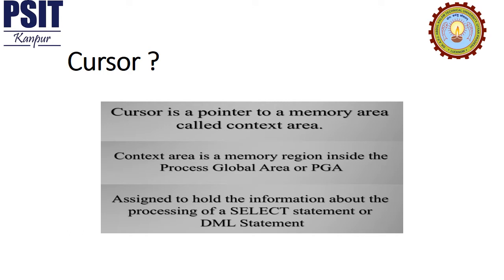So what is a cursor in Oracle Database? A cursor is a pointer to a memory area called the context area. This context area is a memory region inside the Process Global Area, or PGA, assigned to hold the information about the processing of a SELECT statement or DML statement such as INSERT, DELETE, UPDATE, or MERGE.